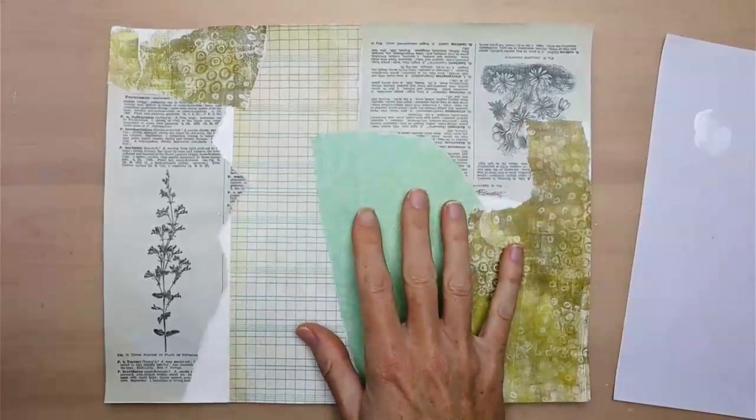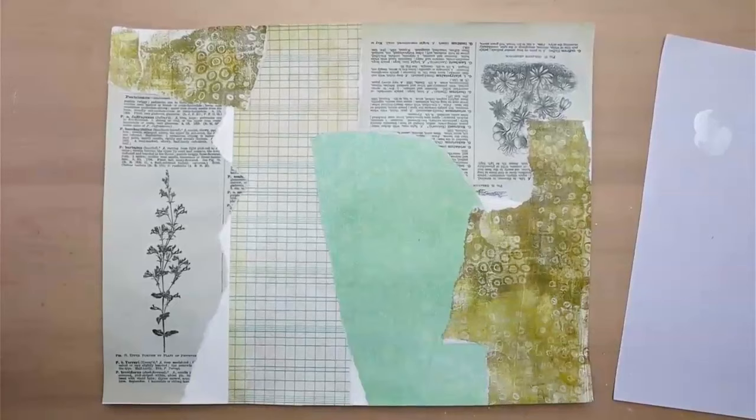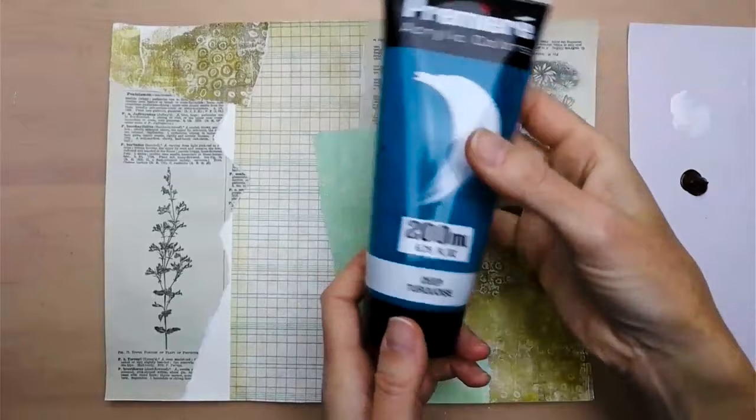If you like this video please feel free to give me a thumbs up so I know to make more like it. Okay, so I'm going to start with some raw umber, turquoise, and some bright aqua green.